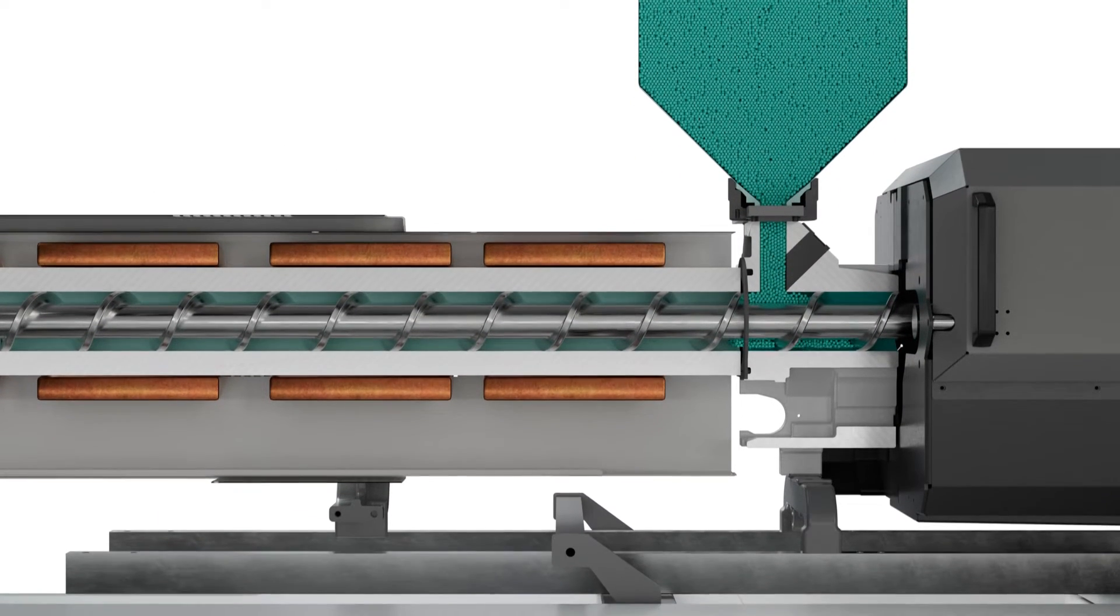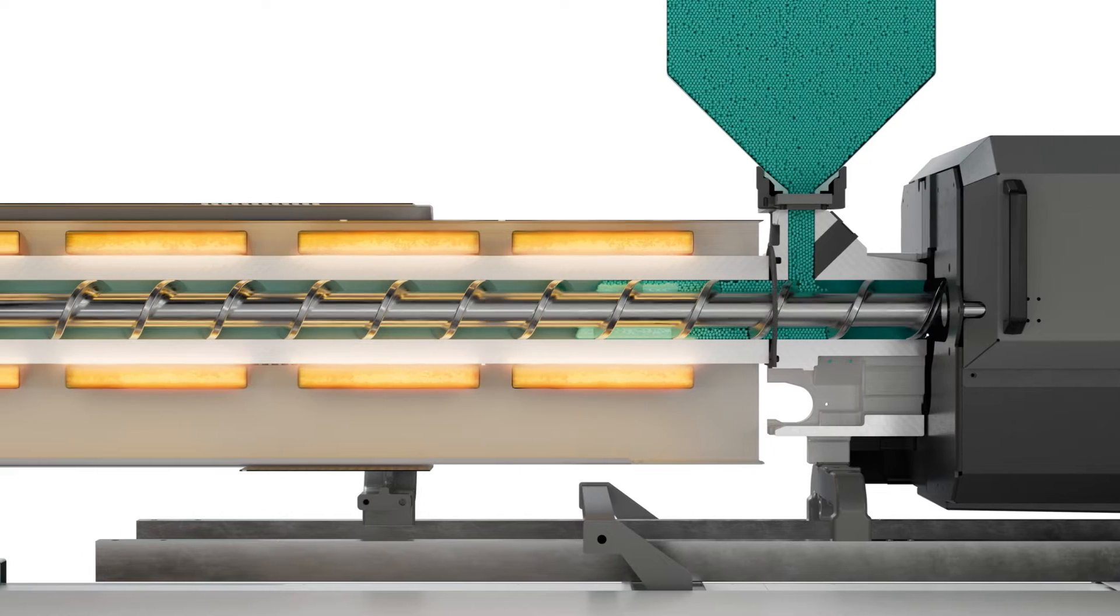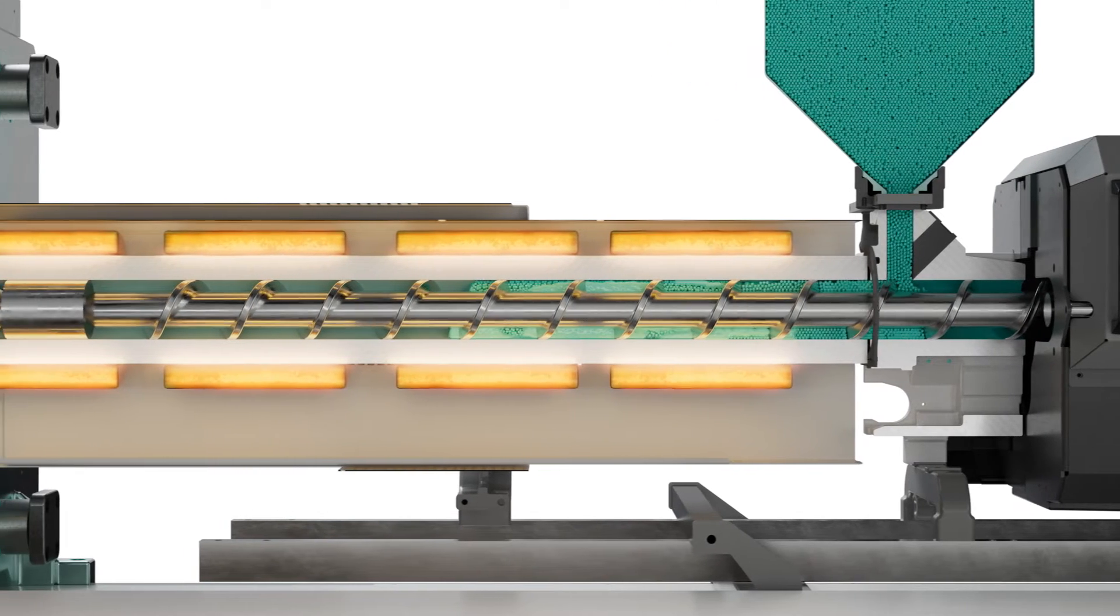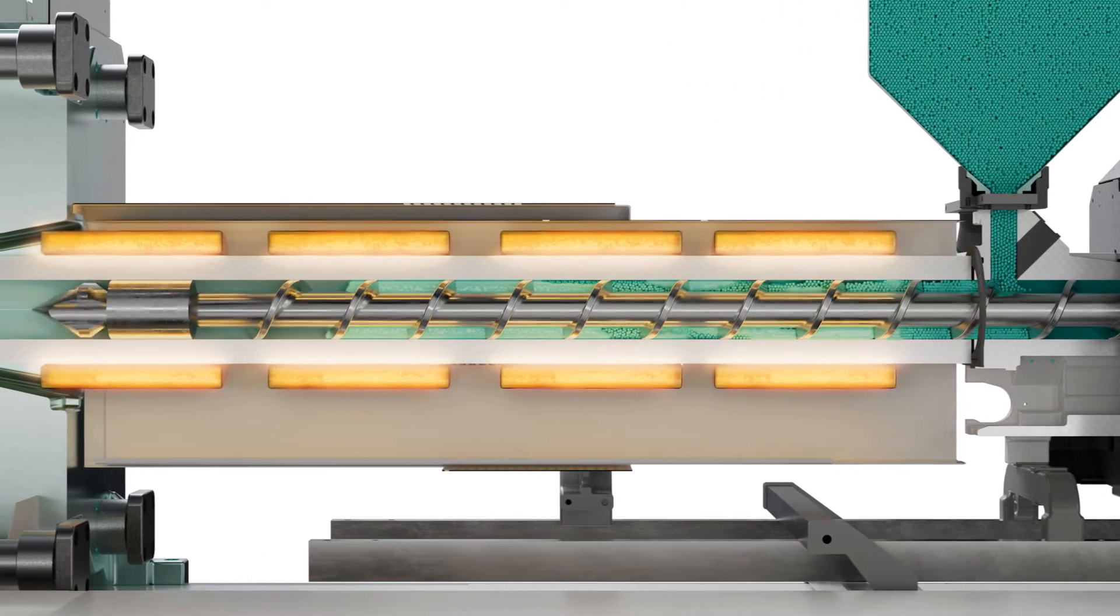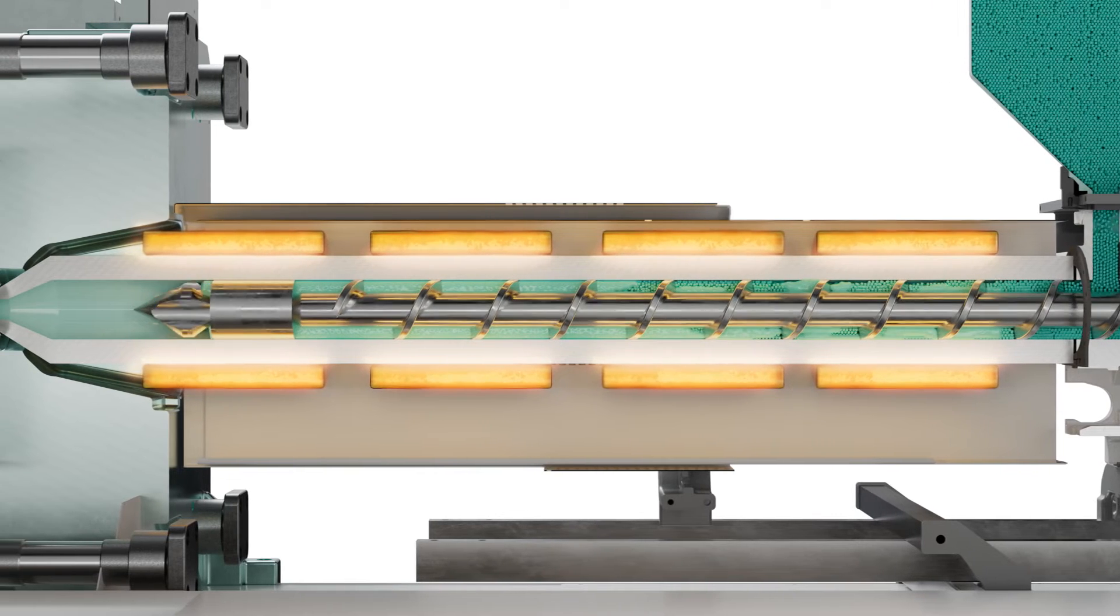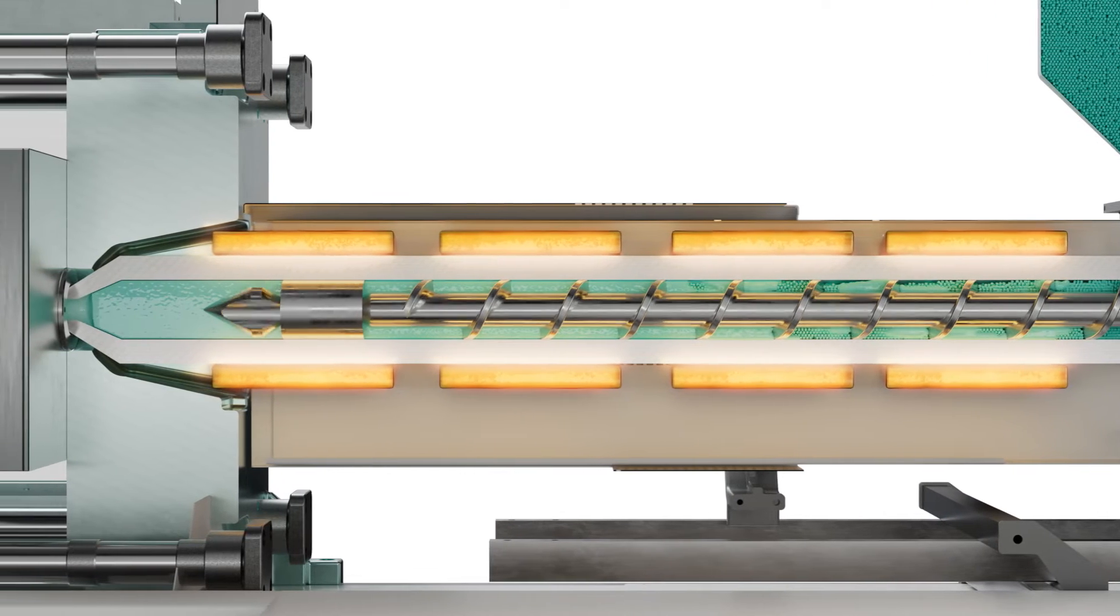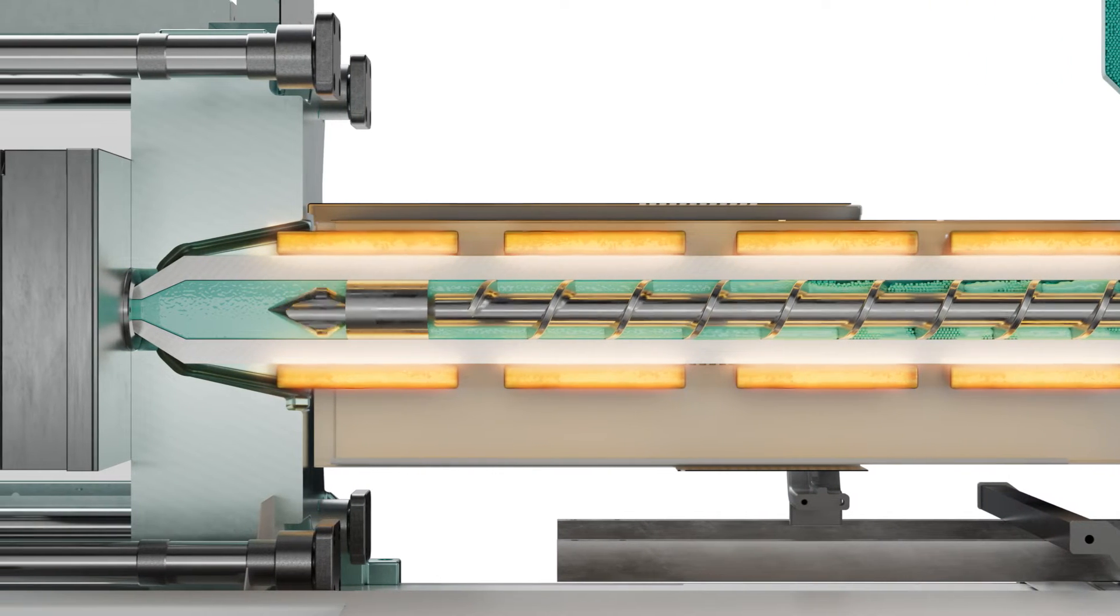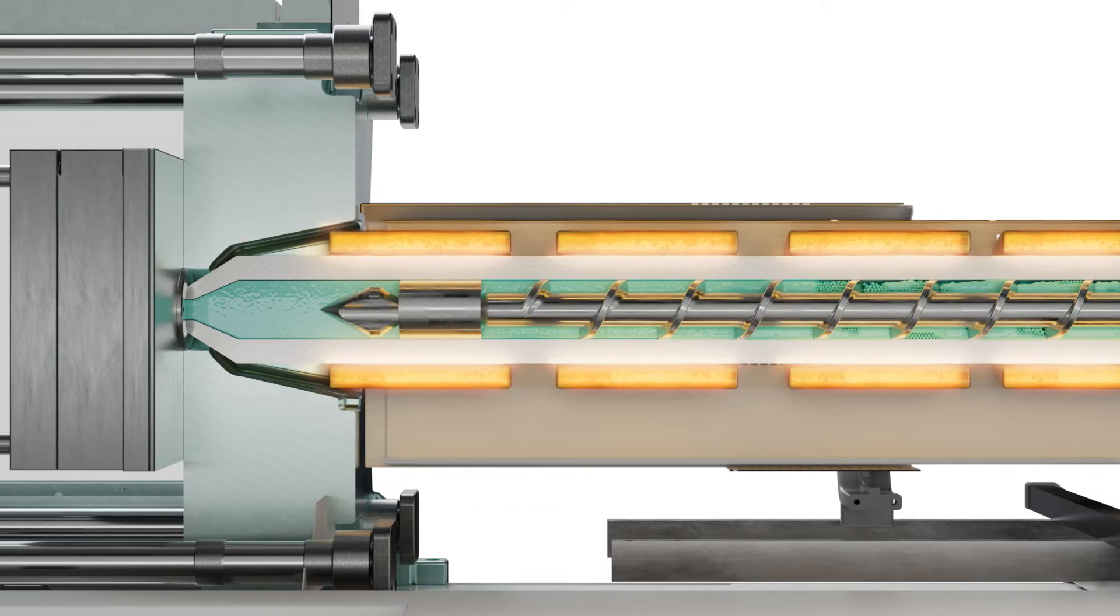The extruder screw in the barrel pushes the granulate towards the nozzle. Meanwhile, heater bands around the barrel heat the plastic to 250 degrees Celsius. By the time it reaches the nozzle, the granulate is completely melted.